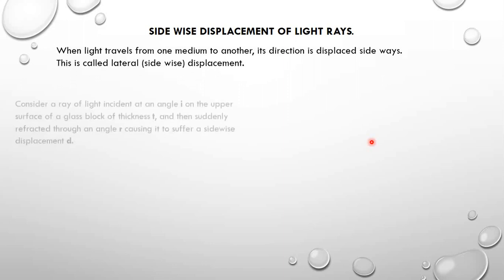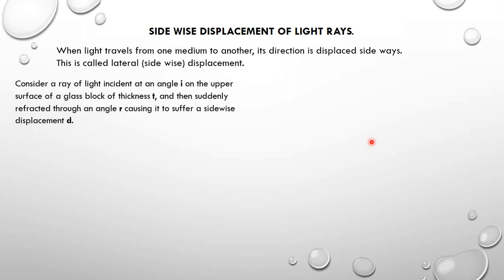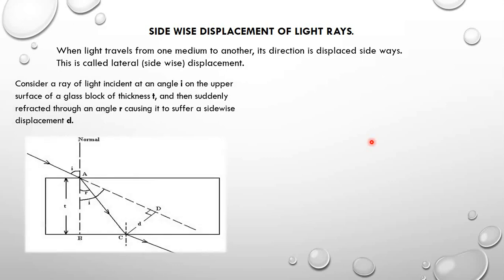Let us consider this. If we have a glass block and a ray which is incident into that glass block at an angle i, and that glass block is of thickness t and the angle of refraction is r, then the sideways displacement d is going to be as shown. That is the sideways displacement.